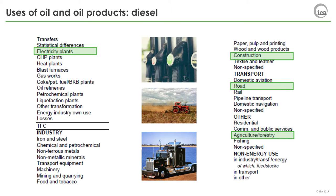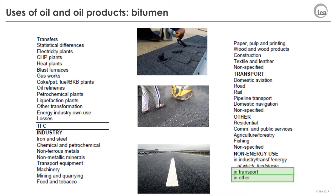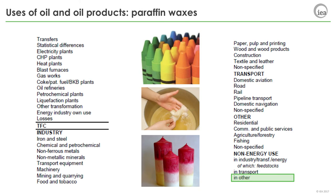Diesel end uses are similar to gasoline, as it is mainly used in transport vehicles. Again, as with gasoline, the same distinction is made when diesel is used for household machines or farm equipment, such as a chainsaw. Many other machines take diesel and those end uses should be classified. For example, a crane used on a construction site which is powered by diesel is a construction end use. Diesel is also commonly used in power generators — a small house without access to an electricity grid may have its own generator, and this use of diesel is considered electricity generation by auto producer, a sub-sector of electricity plants. Bitumen is used to make roads and construct roofs — while road and building construction may be confusing at first, this is in fact a non-energy use. Paraffin waxes are commonly used in cosmetics, candles and crayons — these are again non-energy uses.